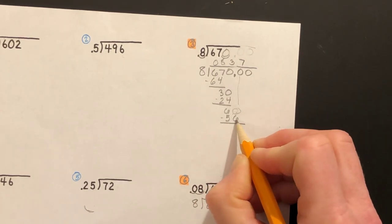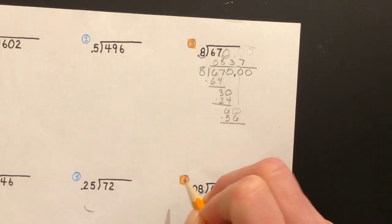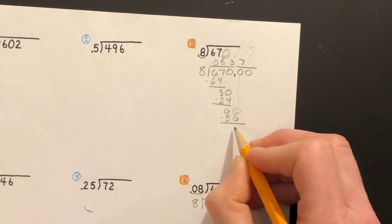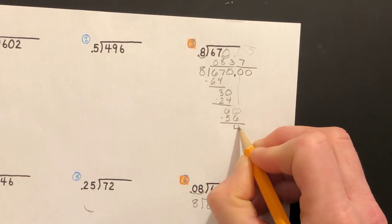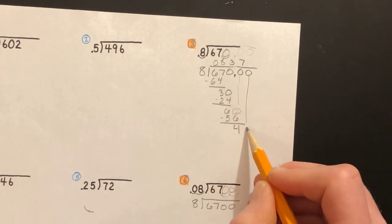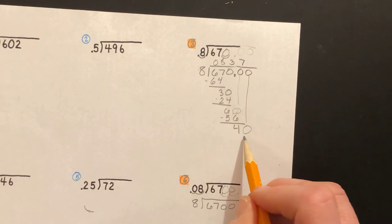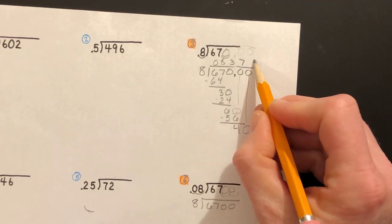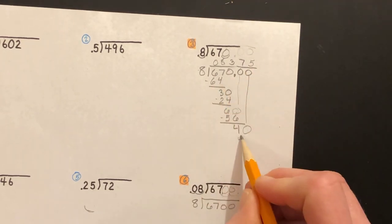60 minus 56 is four. You'll need to regroup if you do that on your own. Bring down the next zero. Eight goes into 40, yes, five times. Five times eight is 40.